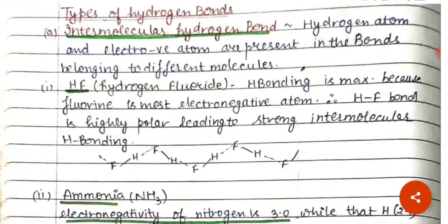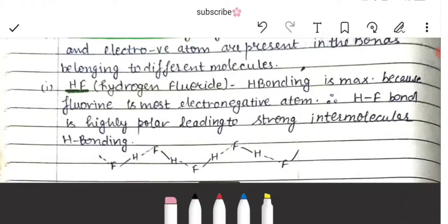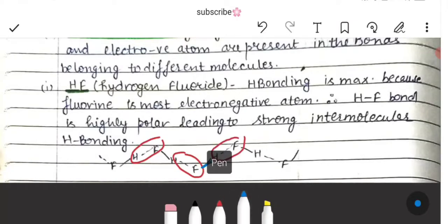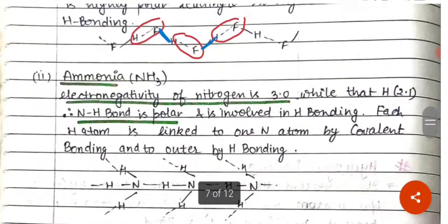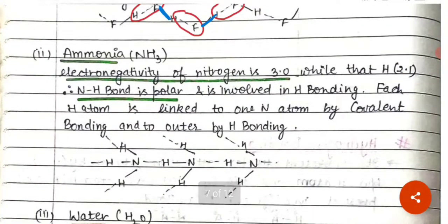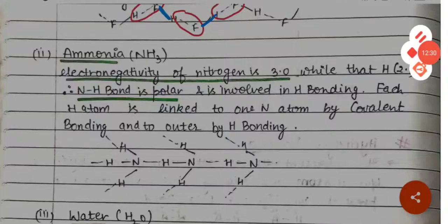Intermolecular hydrogen bonding occurs when the hydrogen atom and electronegative atom are present in bonds belonging to different molecules. For example, in HF molecules, the bonding between separate HF molecules is intermolecular hydrogen bonding. In ammonia, the electronegativity of nitrogen is 3.0 while that of hydrogen is 2.1; therefore, the N-H bond is polar and involved in hydrogen bonding. Each hydrogen atom is linked to one nitrogen atom by covalent bonding and to another by hydrogen bonding.